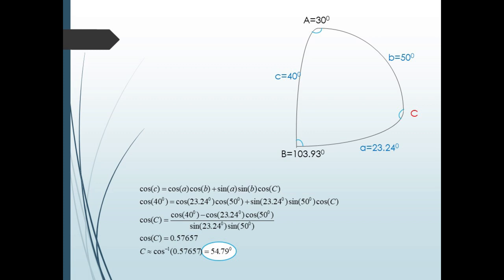Similarly, using the third version, starting with side C, we get: cos 40 = cos 23.24 · cos 50 + sin 23.24 · sin 50 · cos C. Solving for cos C, we get cos C ≈ 0.57657. And finally, vertex C ≈ 54.79 degrees.